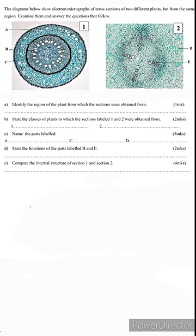Let's begin. The diagram below shows electron micrographs of cross sections of two different plants, but from the same region. Examine them and answer the questions that follow. Part A: Identify the region of the plant from which the sections were obtained from.